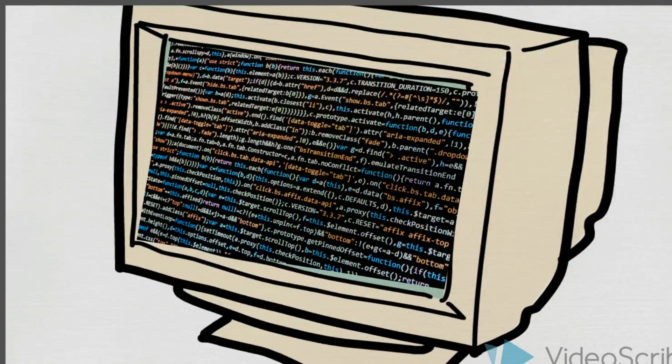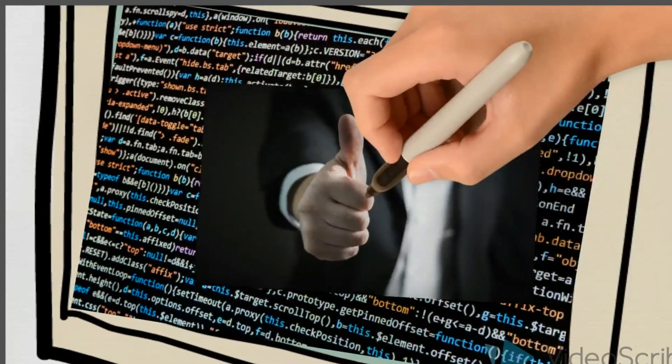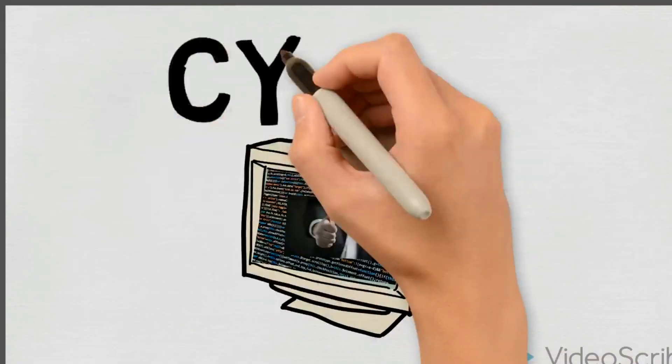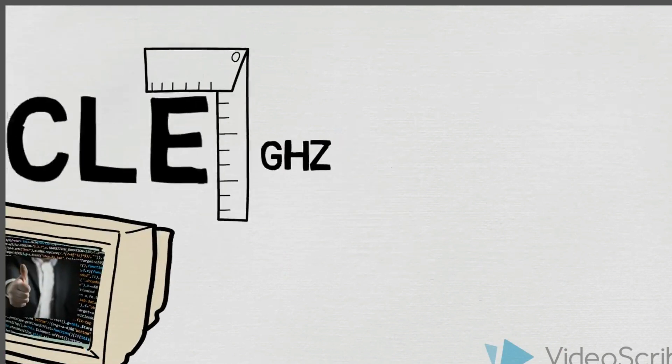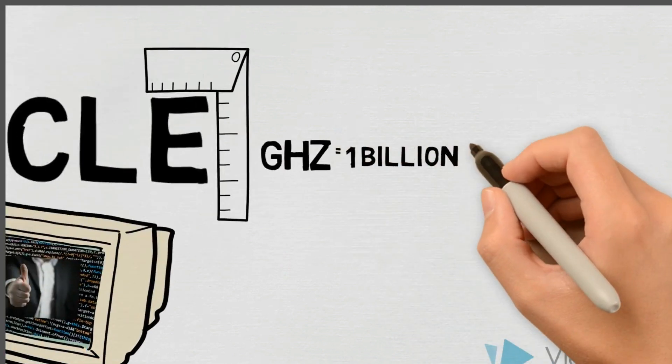When a CPU gets an instruction from a software and executes it, it is called a cycle. These cycles are measured in gigahertz with 1 gigahertz equaling 1 billion cycles.